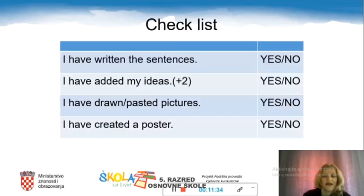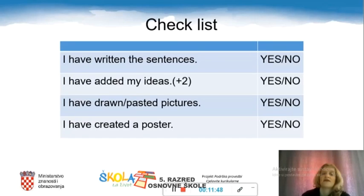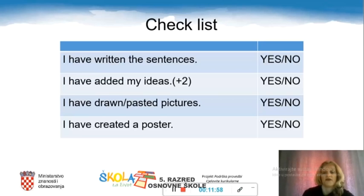And now, this is your checklist to see if you did everything you need to do. I have written the sentences — yes or no. I have added my ideas — two or more. I have drawn or pasted pictures. And I have created a poster.